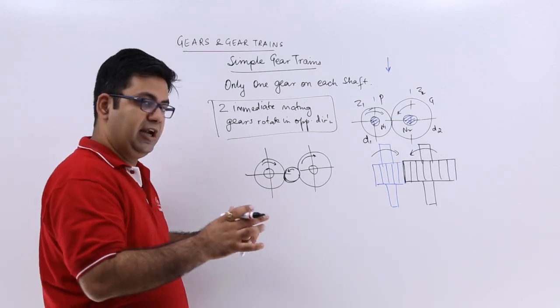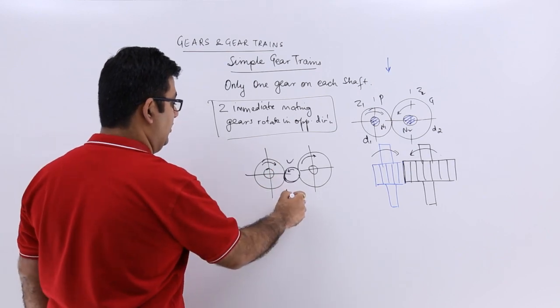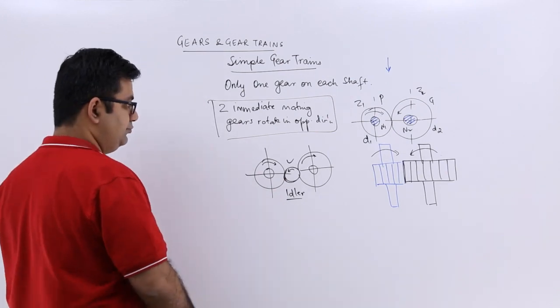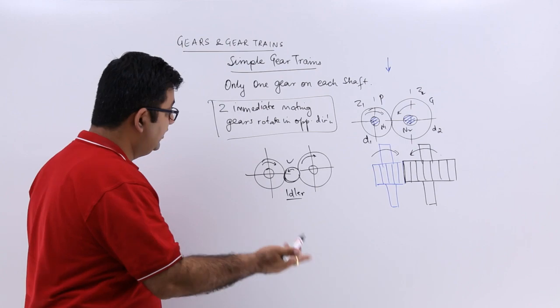So in order to keep the direction same, you put an idle gear in between. These are idler gears. If you put two idler gears, then again you will have the opposite directions.